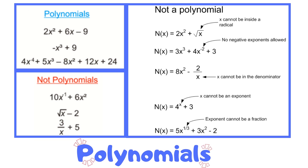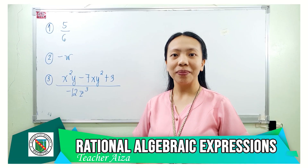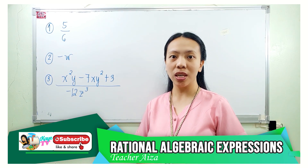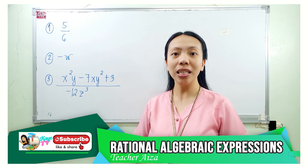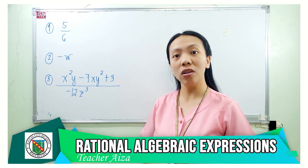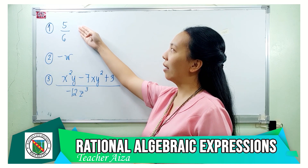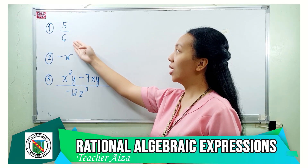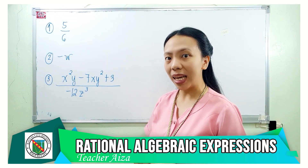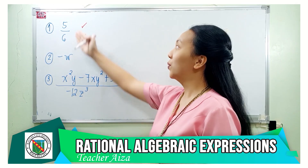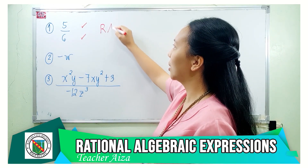Take a look at the table. Take note that an expression can only be considered a rational algebraic expression if both the numerator and the denominator are polynomials. Let's take a look at these examples. The numerator 5 — is it a polynomial? Yes. What about the denominator 6? Is it a polynomial? Yes. Since both p and q are polynomials, therefore 5 over 6 is a rational algebraic expression.